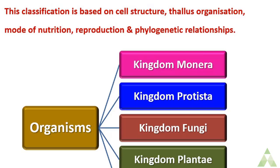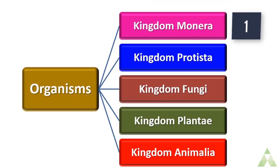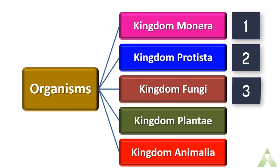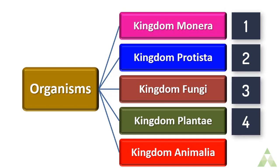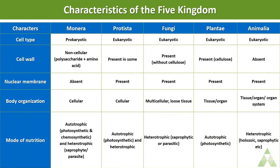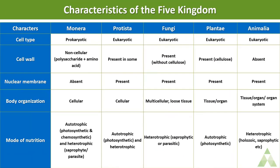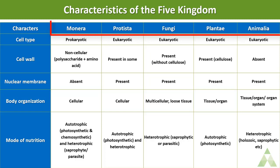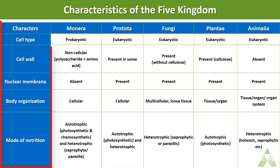As per the five-kingdom classification, organisms were divided into: kingdom Monera, kingdom Protista, kingdom Fungi, kingdom Plantae, and kingdom Animalia. Let's have a broad look at the various characteristic features present in each of these groups.